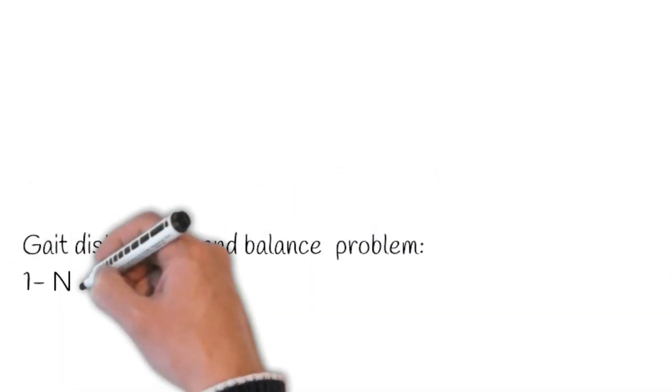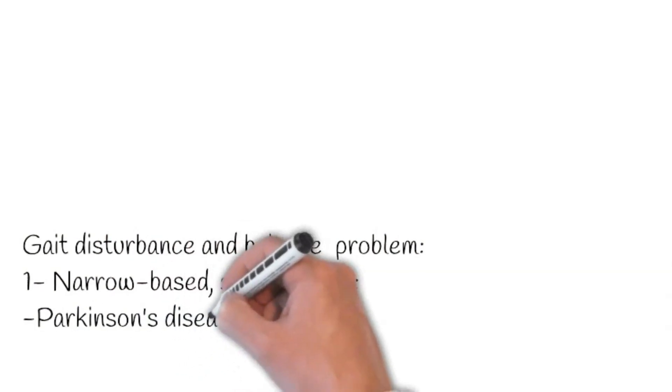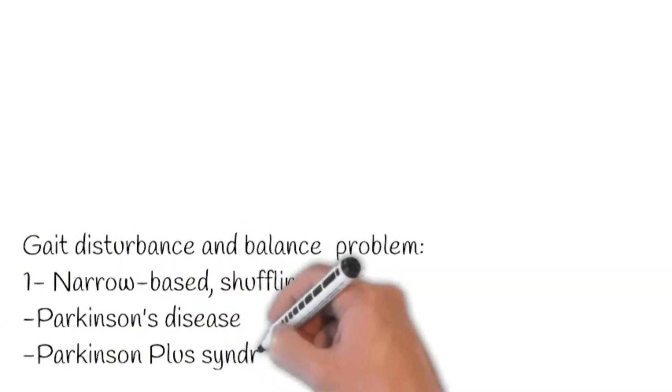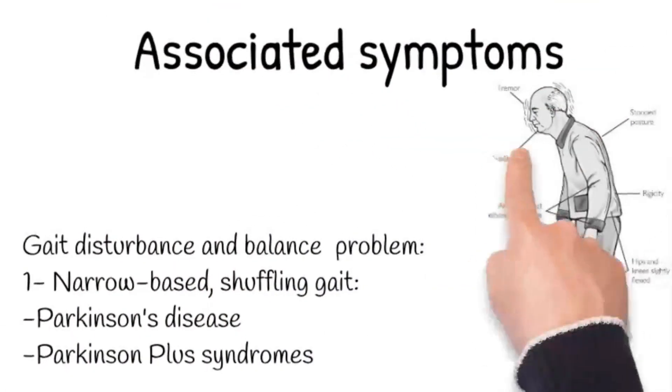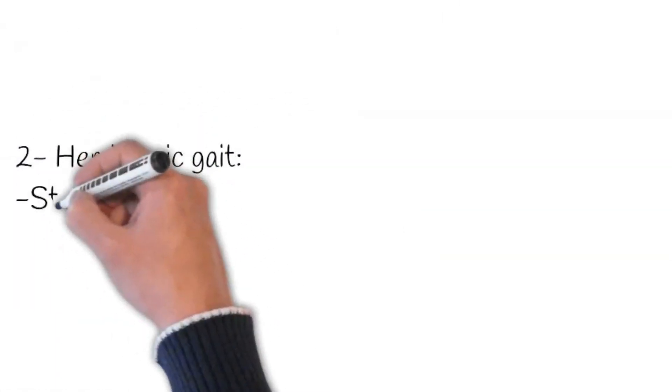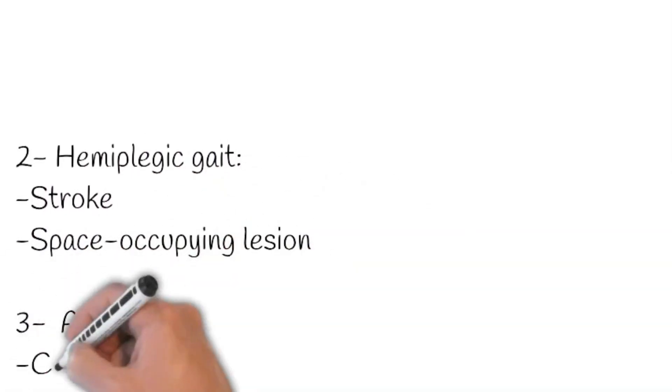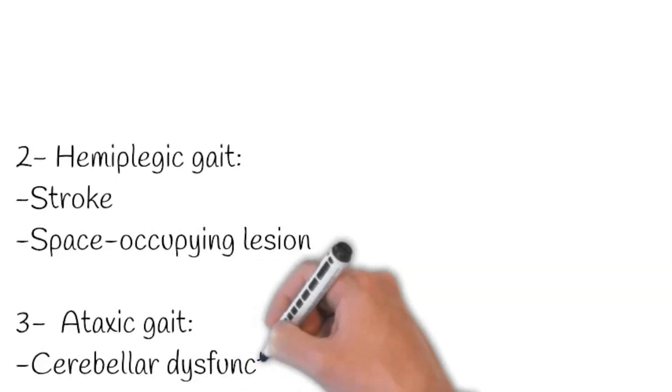As it provides vital information to narrow down our diagnosis for memory loss. Parkinson's disease and Parkinson Plus syndromes are associated with narrow based shuffling gait, whereas normal pressure hydrocephalus is characterized by broad based gait, and hemiplegic gait is typical of a stroke or space occupying lesion.